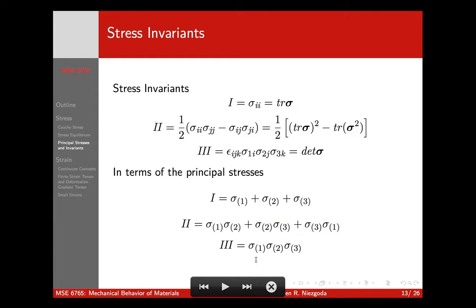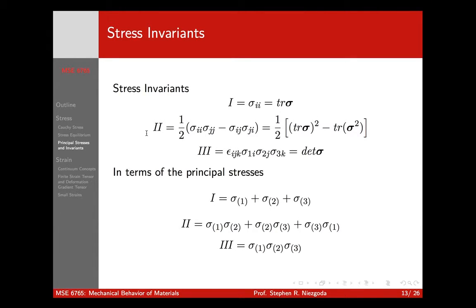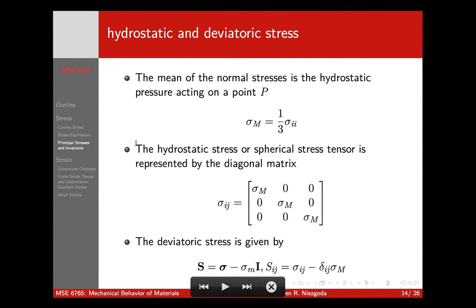In terms of the principal stresses, these are easy to calculate. The first invariant is just the trace (sum of principal stresses). The second invariant is the sum of all possible pairwise products of the diagonal terms. The determinant of a diagonal tensor is just the product of the diagonals. The second invariant becomes very important when we talk about plasticity — J2 flow theory has to do with the invariants of the deviatoric stress tensor, which we'll discuss on the next slide.